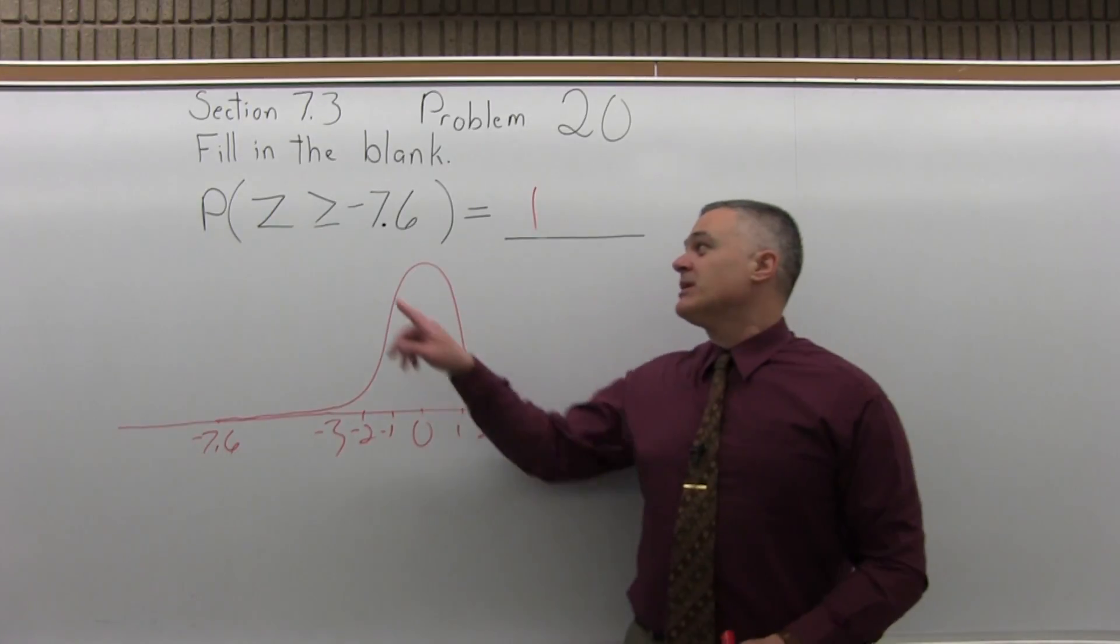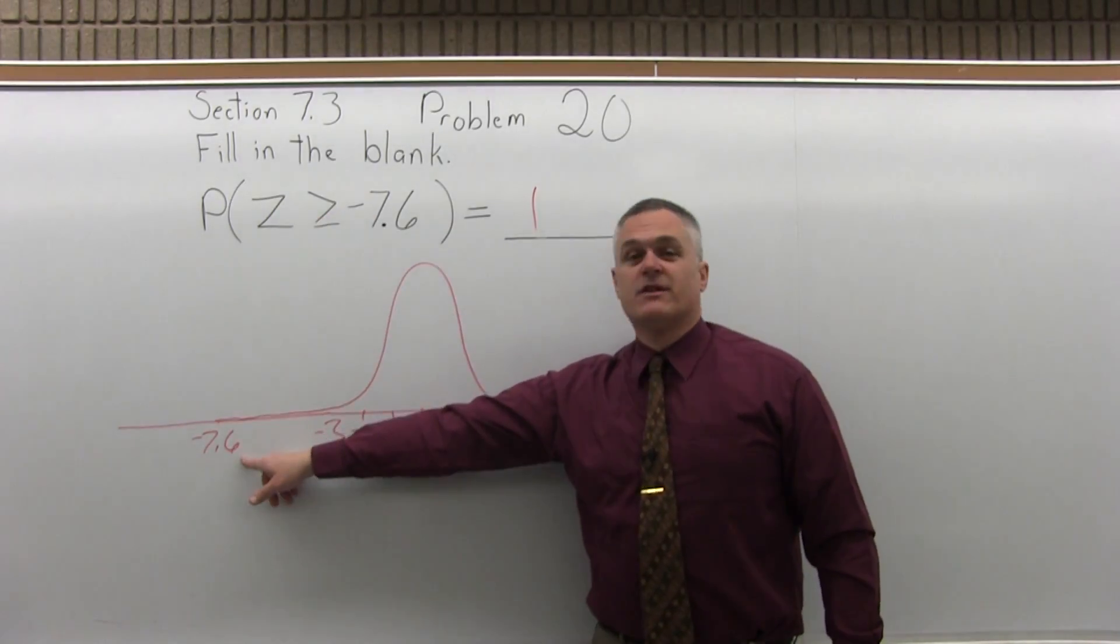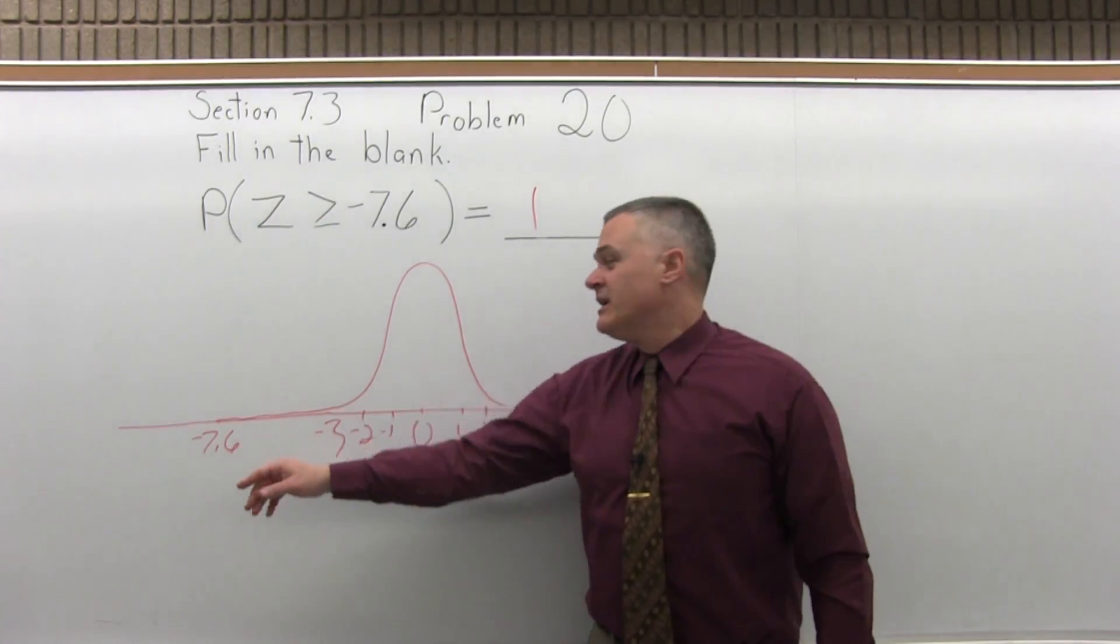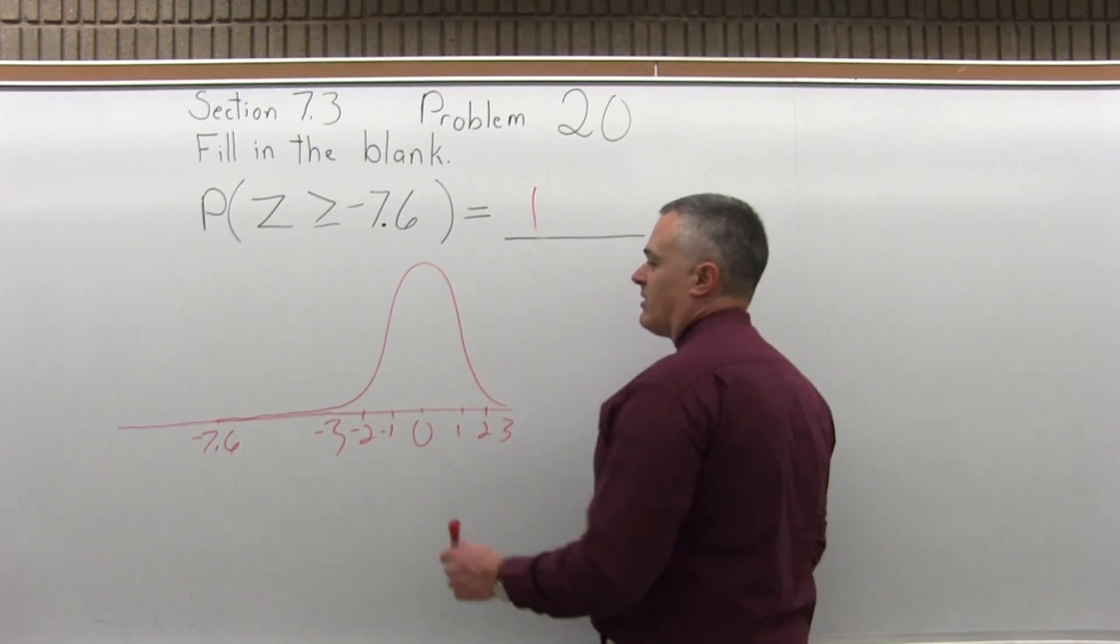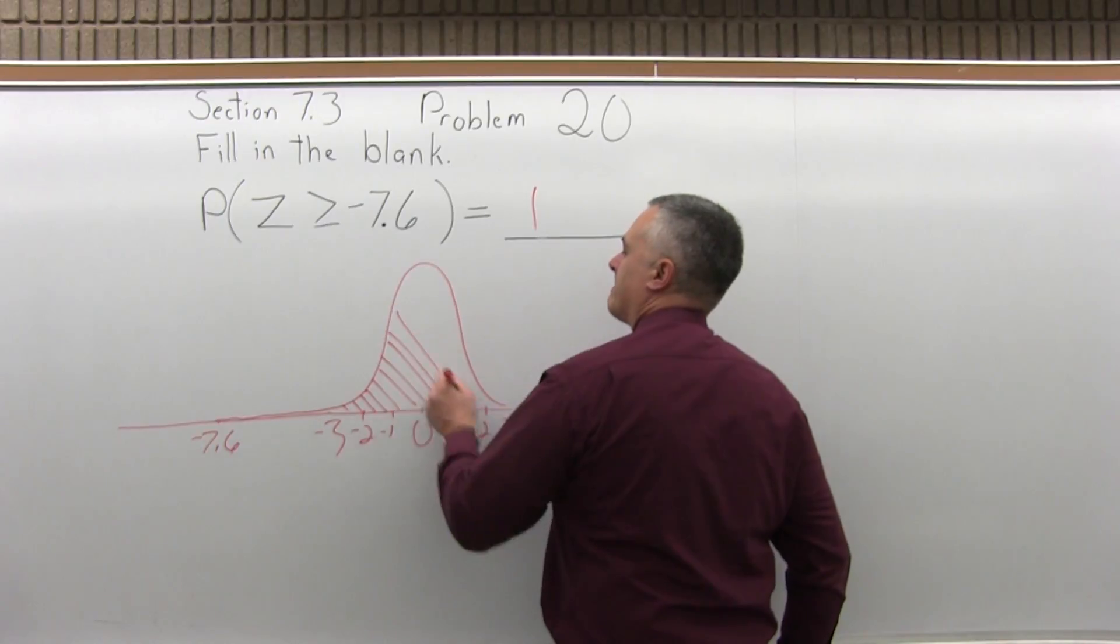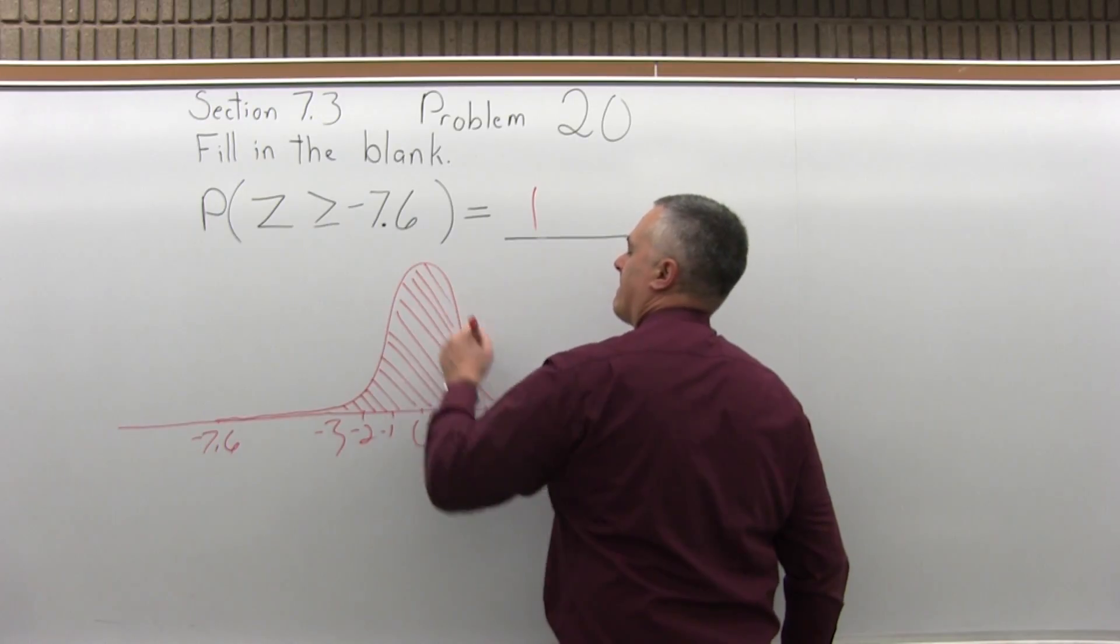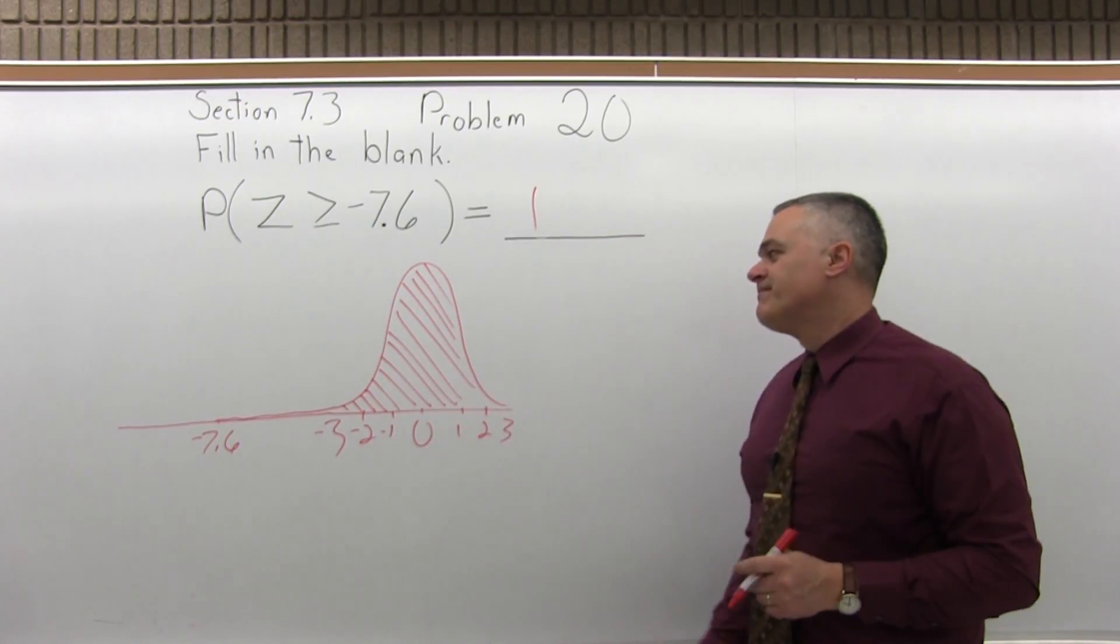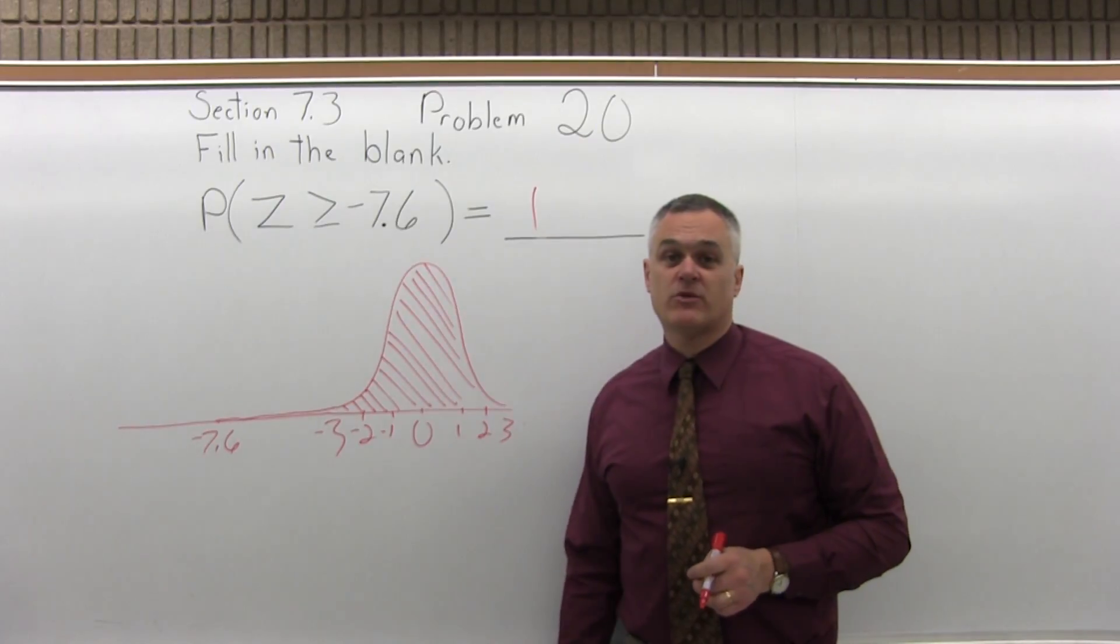So, the probability of being greater than a value that's so far to the left is essentially the entire bell curve. You shade in the whole thing. So it's a probability of 1 or 100 percent probability.